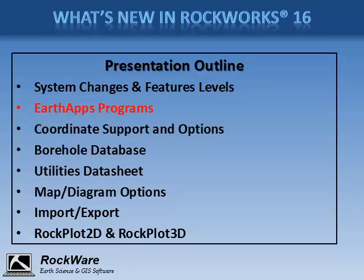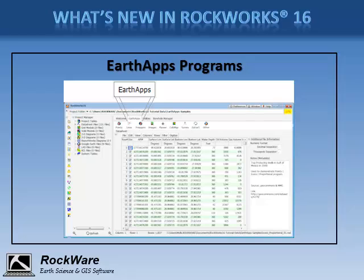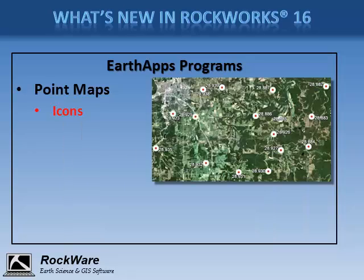The Earth Apps are accessed via a new program tab in RockWorks. The Earth Apps includes eight new menus for creating Google Earth displays of spatial data — points, lines, polygons, images, flyovers, cell maps, and survey maps — and for extracting data from Google Earth for listing in the RockWorks data sheet.